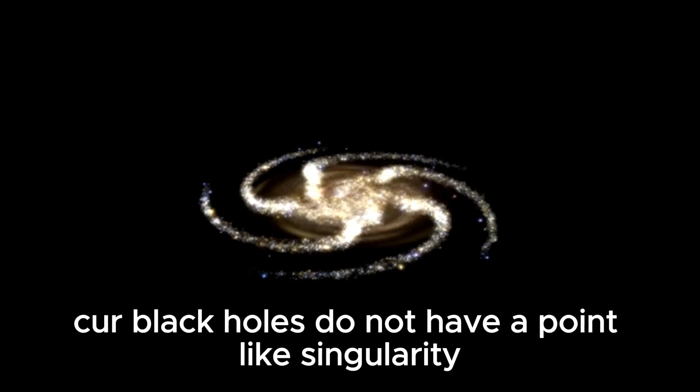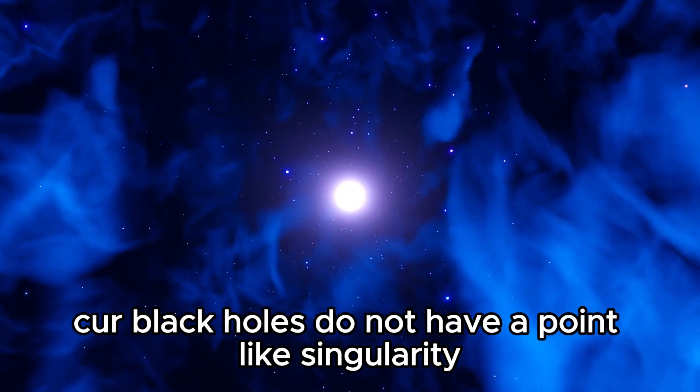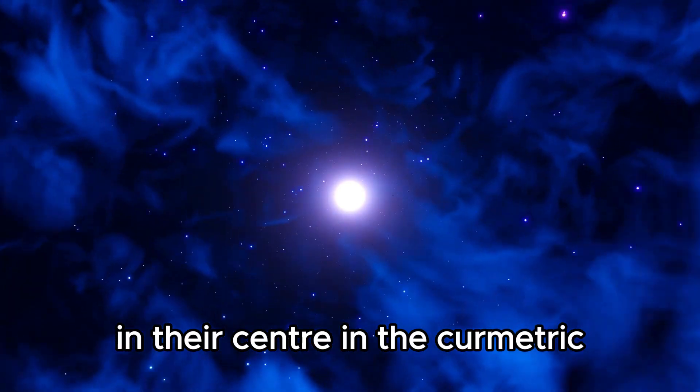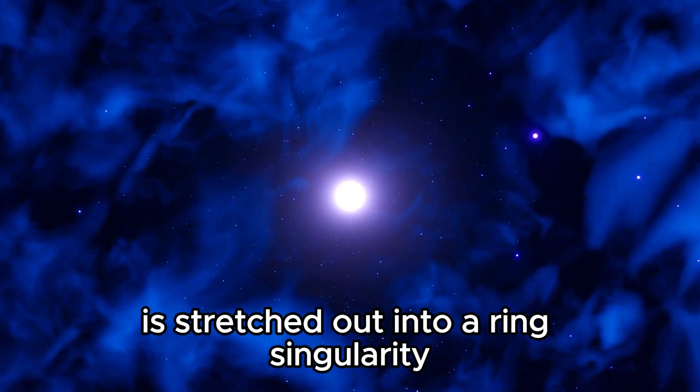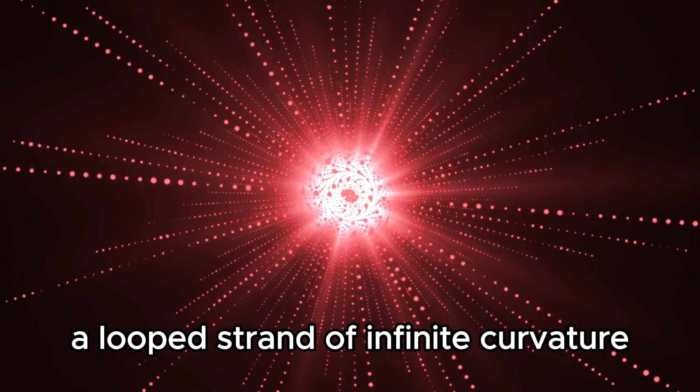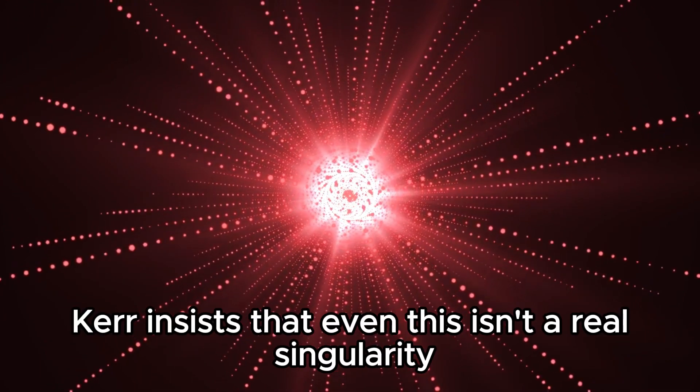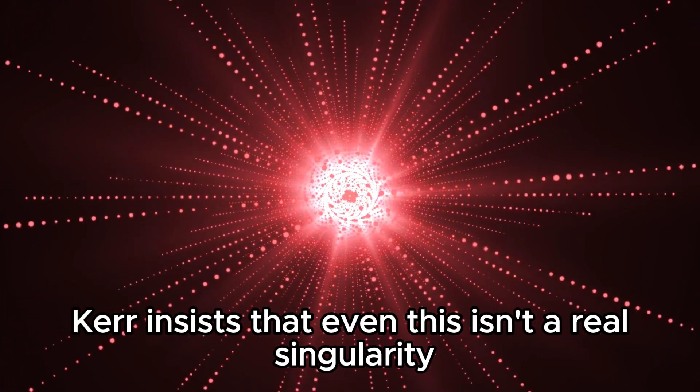Kerr black holes do not have a point-like singularity in their center. In the Kerr metric, the point singularity is stretched out into a ring singularity, a looped strand of infinite curvature. But Kerr insists that even this isn't a real singularity.